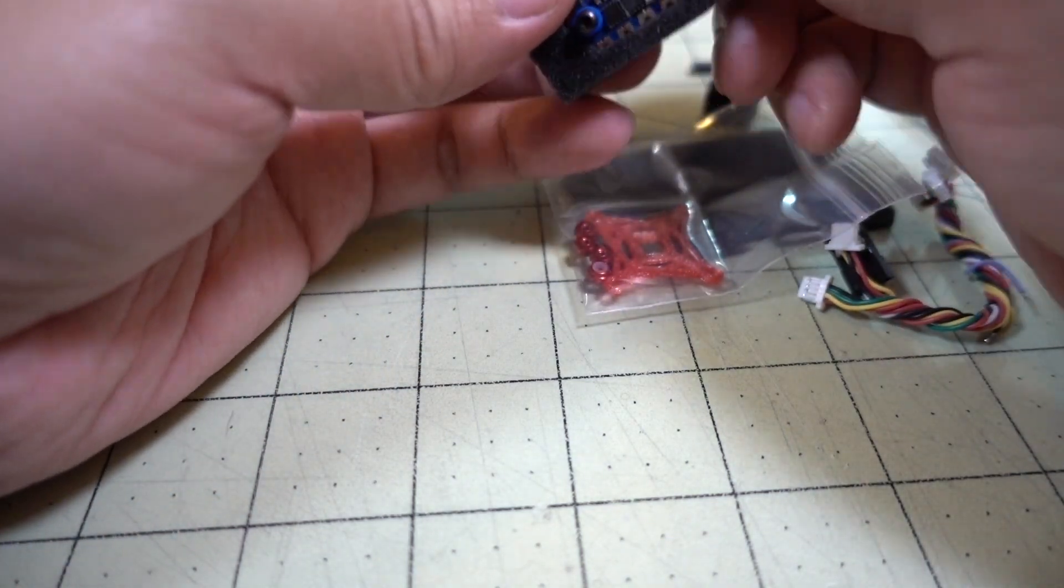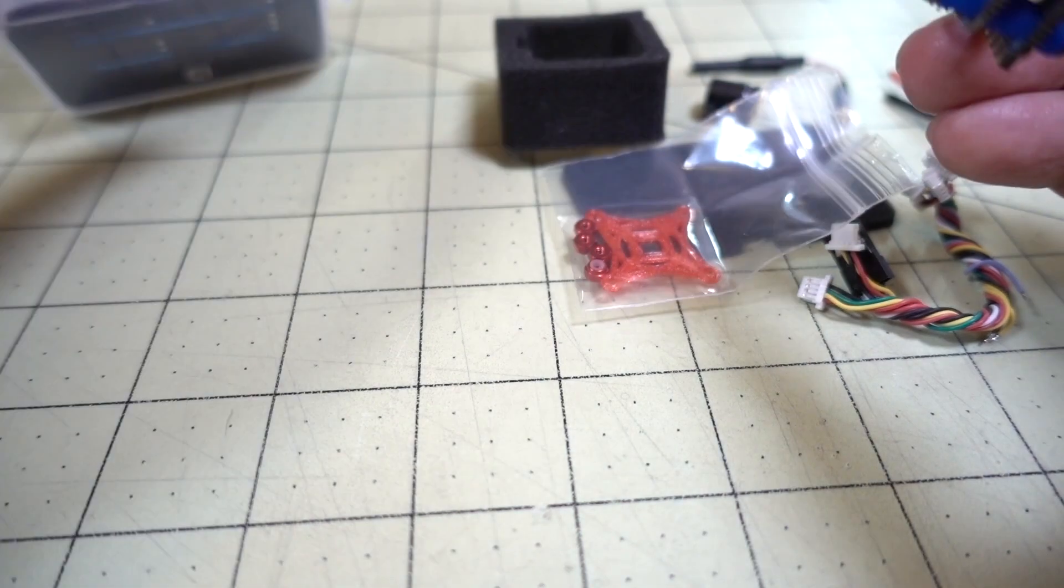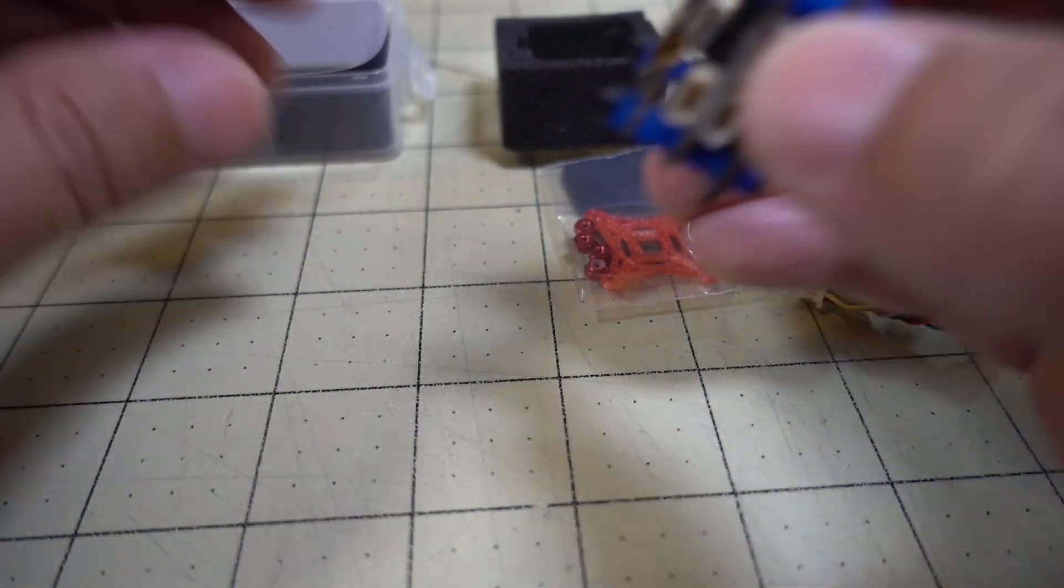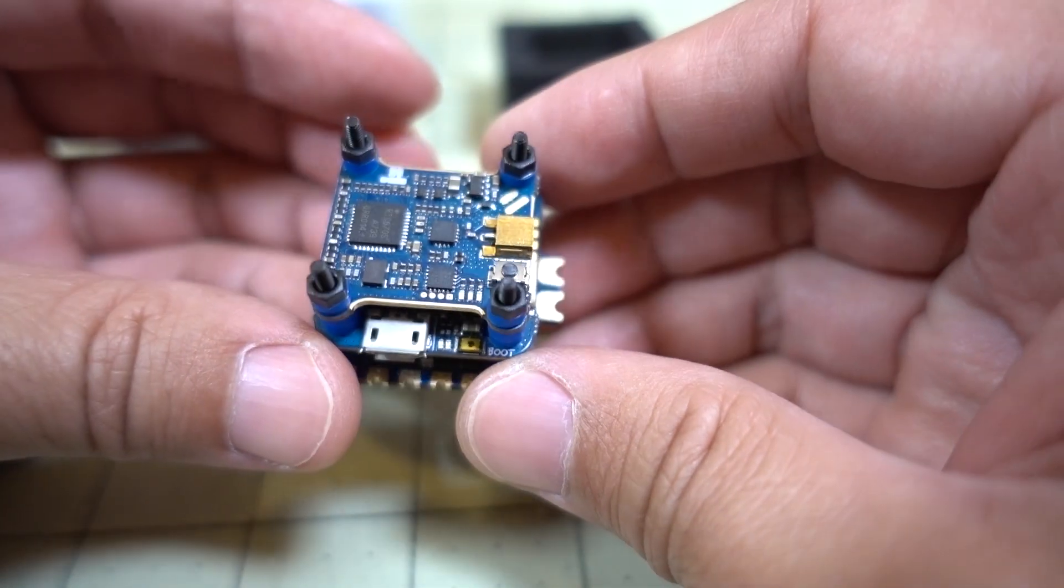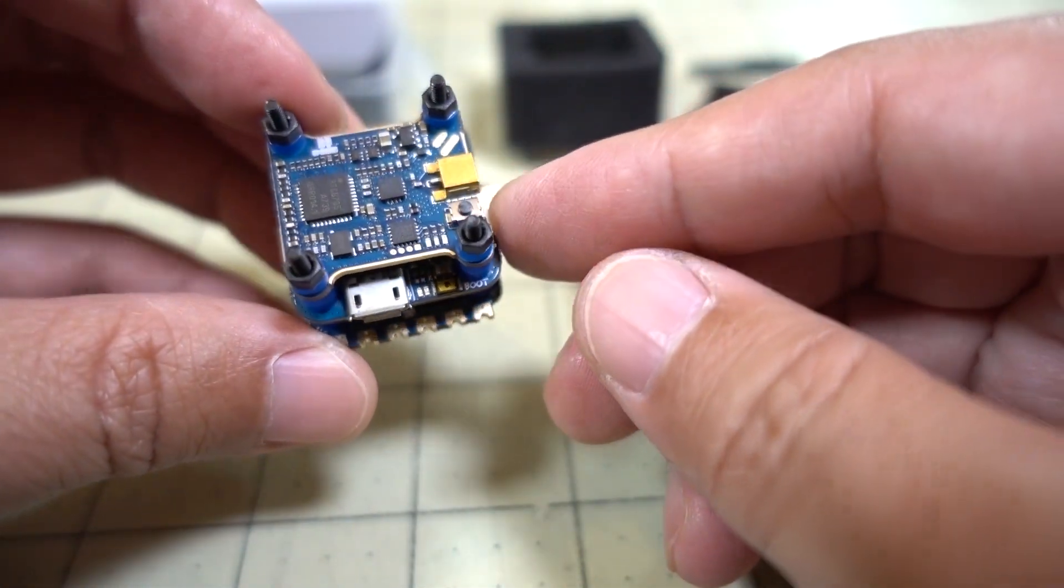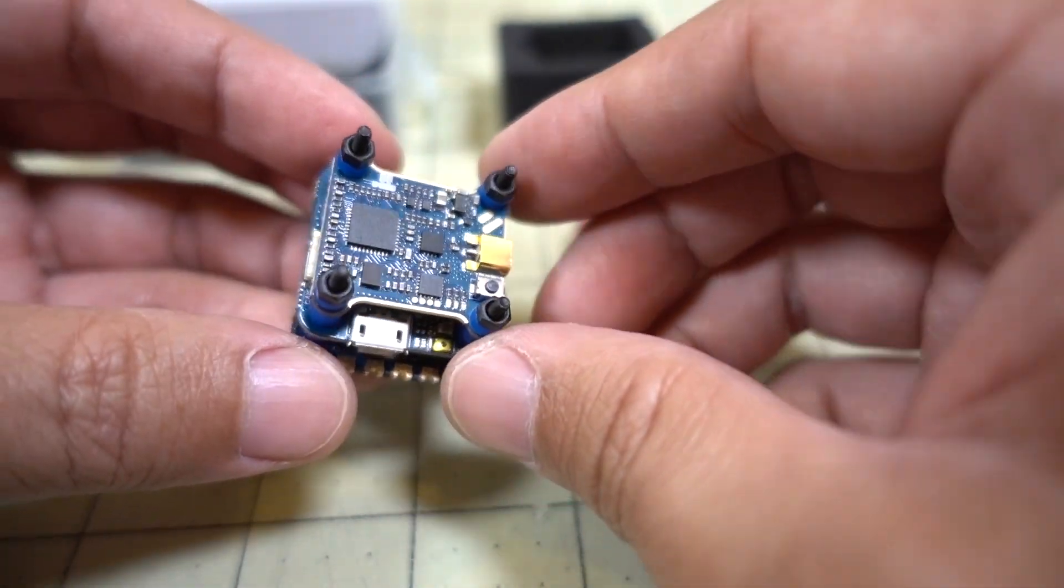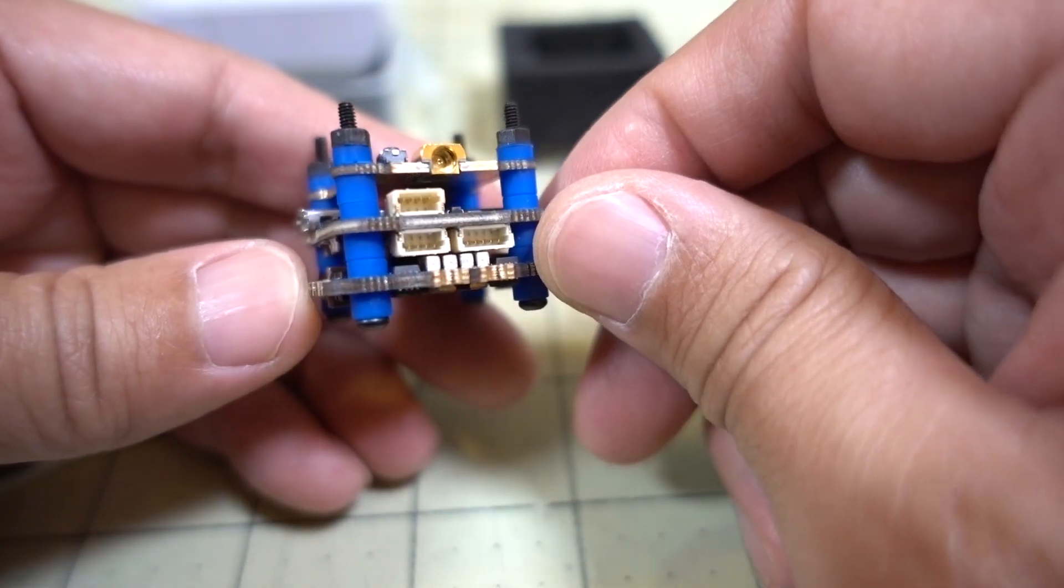Let's take a look at the stack here. I have heard that this is pretty much the same as the KepRC F7. I don't have that one yet so I can't really verify that. I do have the F7 stack in the CinePro, but I'm not going to take it apart. They're actually going to send me the stack, so I'm going to wait until that comes.